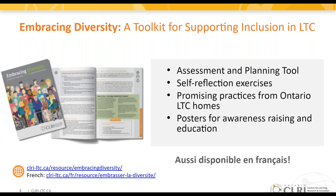Our Embracing Diversity Toolkit was released in June of 2020. It includes interactive resources with print and online components, and is organized into seven impact areas spanning all aspects of operations from human resources to policy planning to resident and family engagement. It provides homes with practical steps to nurture affirming communities, including an organizational assessment and planning tool to assess areas of strength, areas for improvement, and measure progress over time. We also highlight promising practices featuring stories from Ontario long-term care homes.